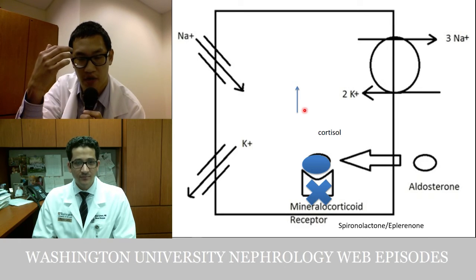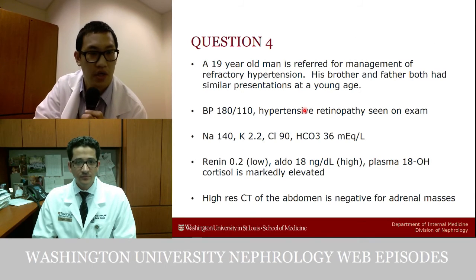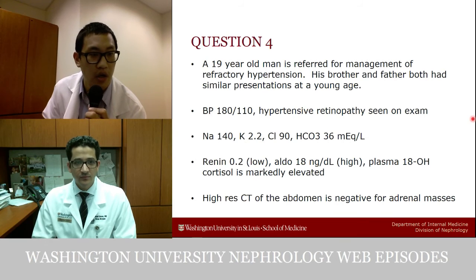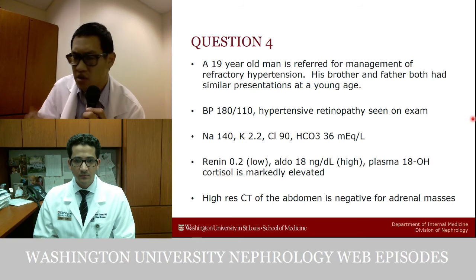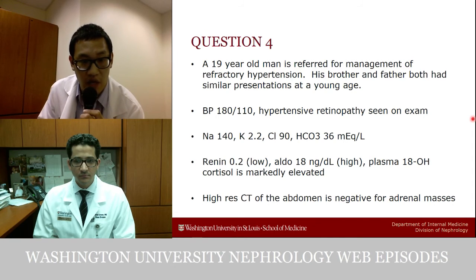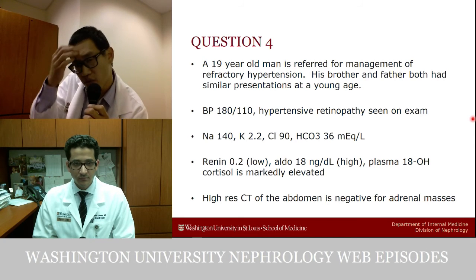Next question: a 19-year-old man referred for refractory hypertension whose brother and father both had similar presentations at a young age. BP 180/110 with hypertensive retinopathy. Sodium 140, potassium 2.2, chloride 90, bicarbonate 36. Renin is low and aldosterone is high. Plasma 18-hydroxycortisol is markedly elevated, and high-resolution CT of the abdomen is negative for adrenal masses. What does this patient have, and why?